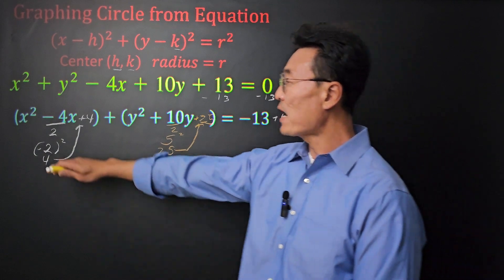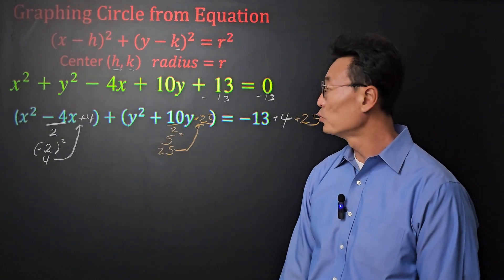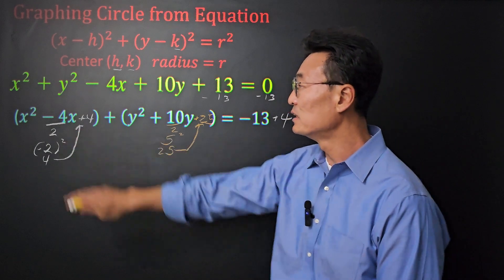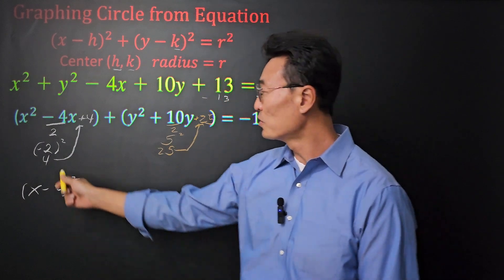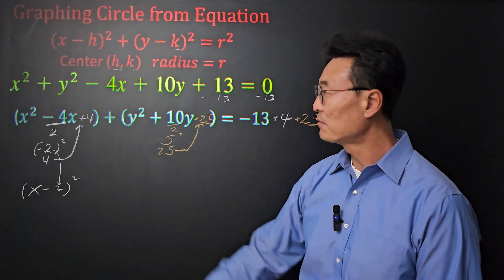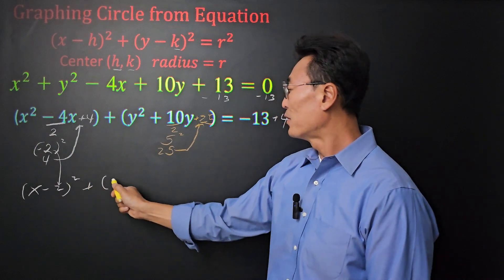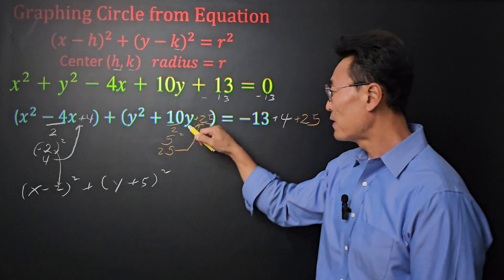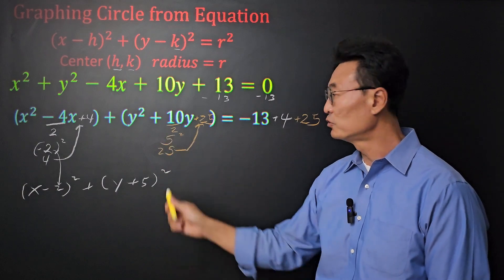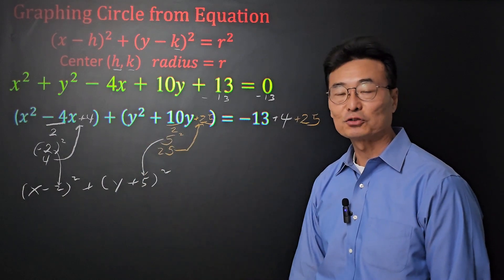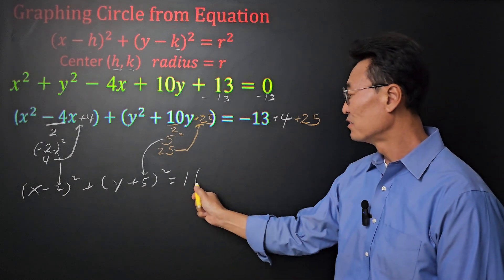Our next step is to factor the x squared minus 4x plus 4, and also the y squared plus 10y plus 25. When you factor the x squared minus 4x plus 4, we get x minus 2 squared, and notice that negative 2 from here is actually the negative 2 that we have. That way you can save some time. Instead of factoring, just go ahead and use the negative 2. We now have y plus 5 squared by factoring y squared plus 10y plus 25, but again you know that 5 that we had by dividing the 10 by 2 can be used instead of the actual factoring process. And then we can set this equal to negative 13 plus 4 plus 25, which is 16.